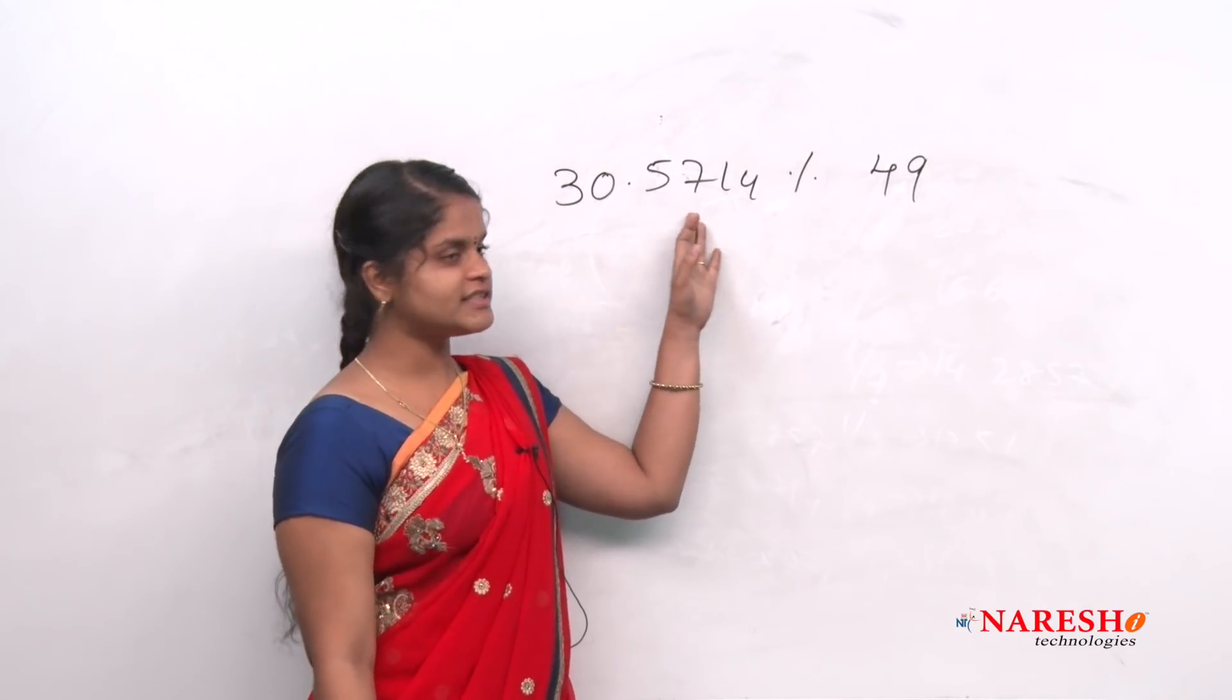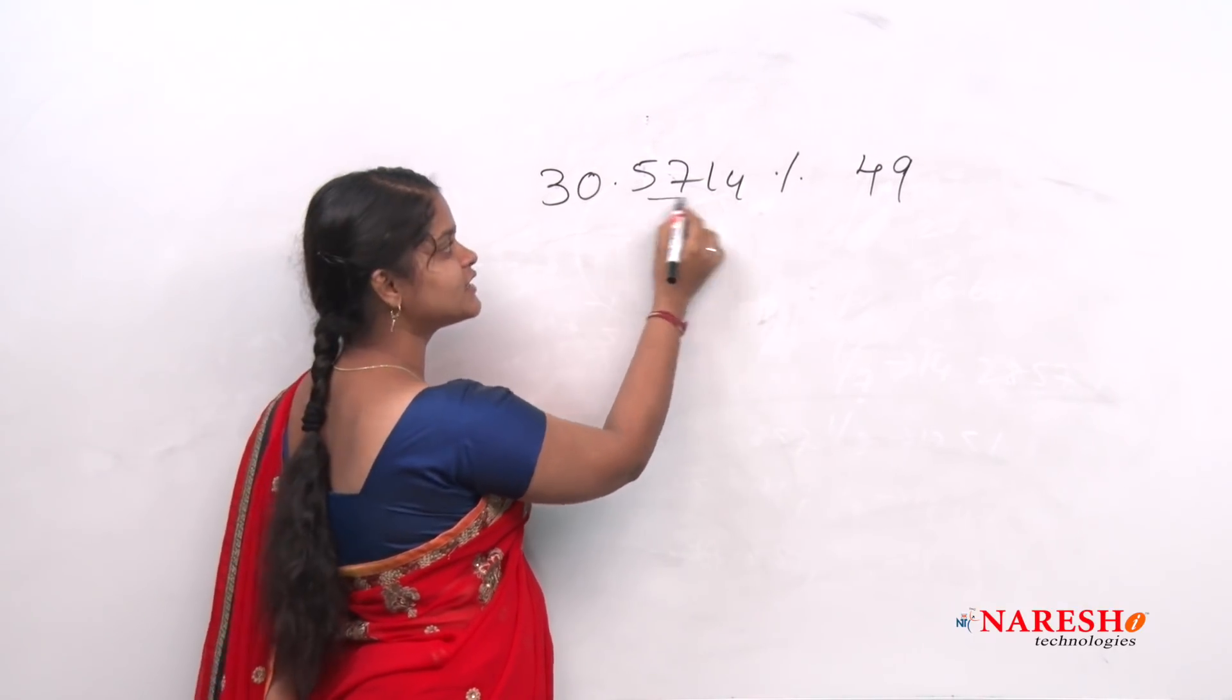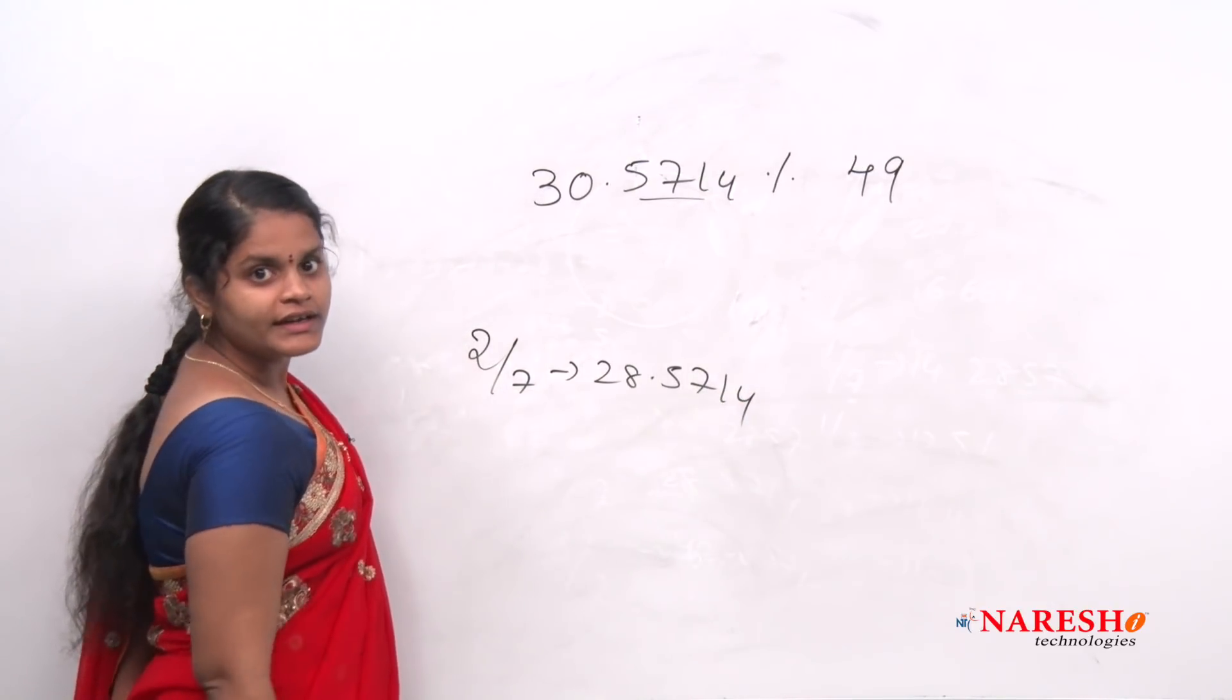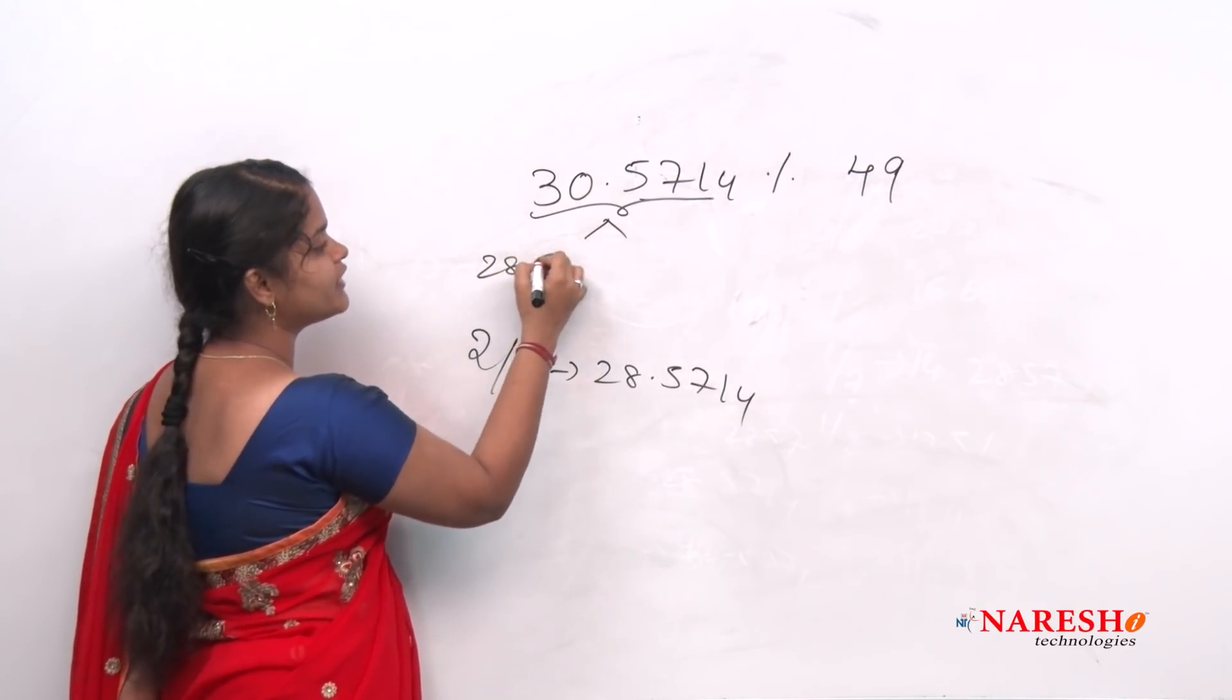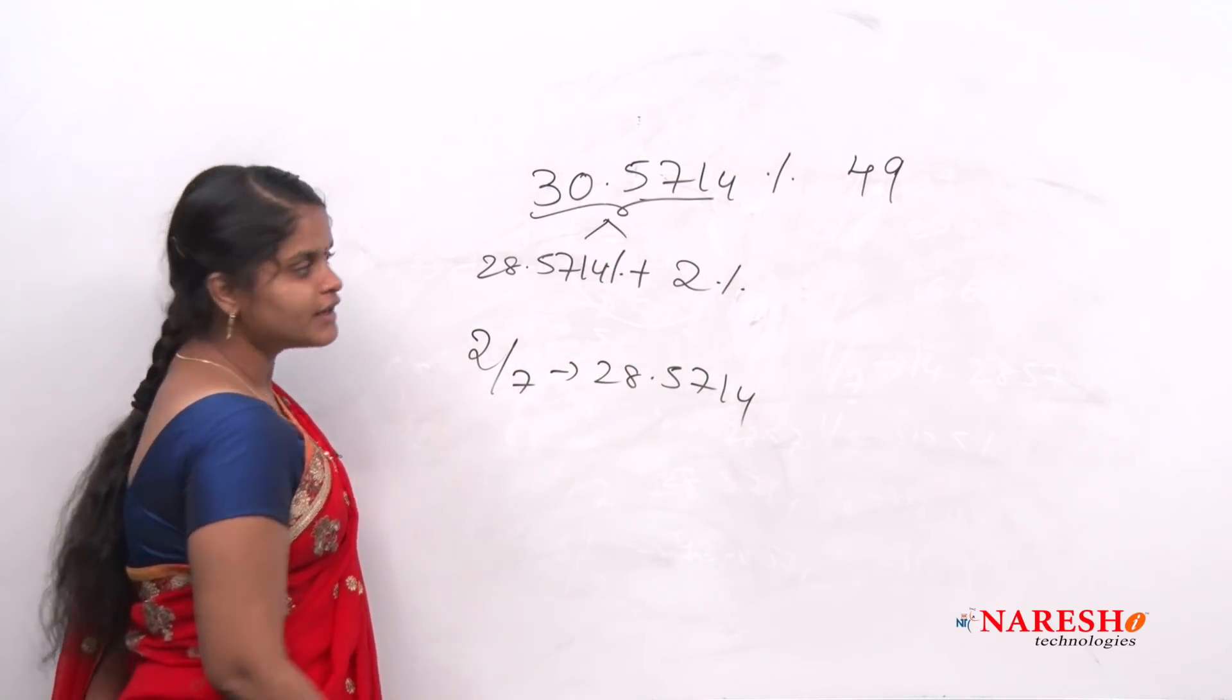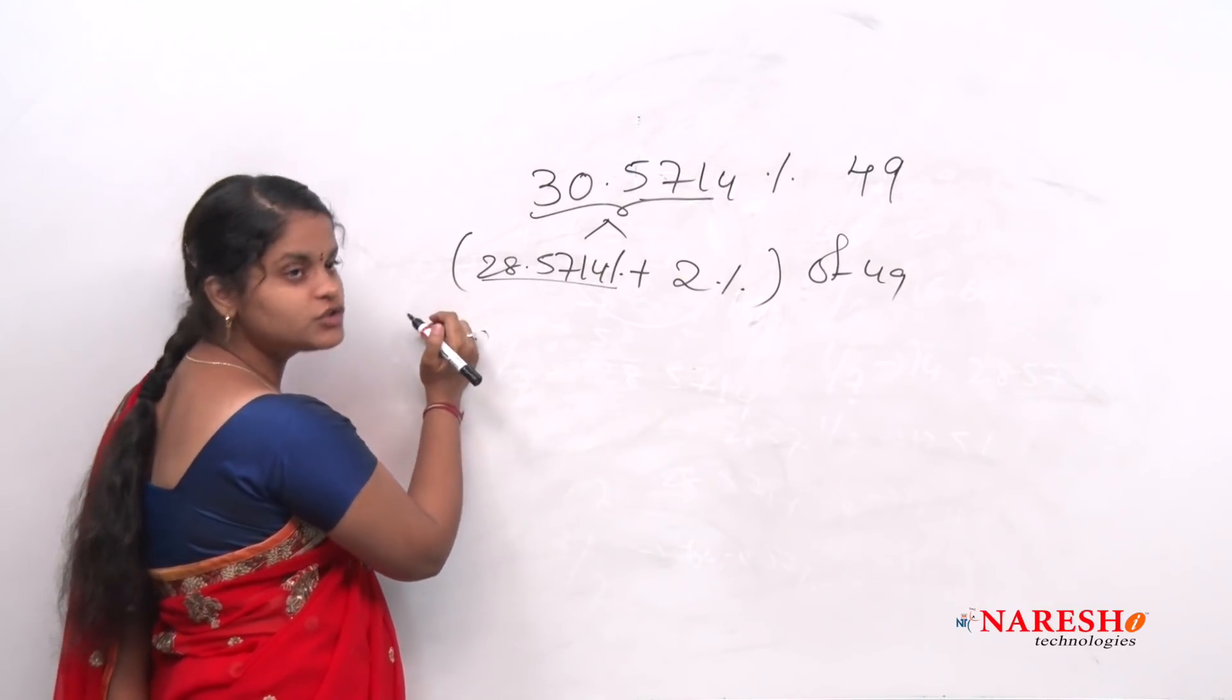So there is a problem like 30.5714 percentage of 49. How can I write? See this value is 5714. In which fraction we find this? 7, right? 2/7 value is how much? 28.5714, right? So now can I write it as 28.5714 plus 2 percent? Yes. So that will be 30.5714. So 2/7 of 49 plus 2 percent of 49, right?